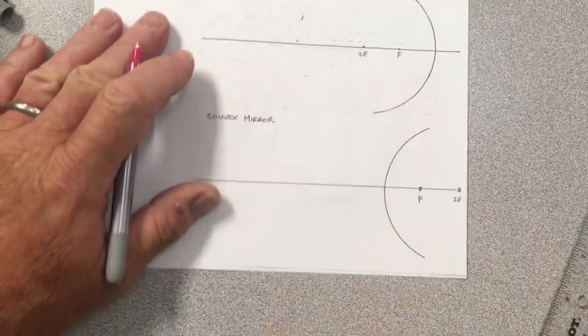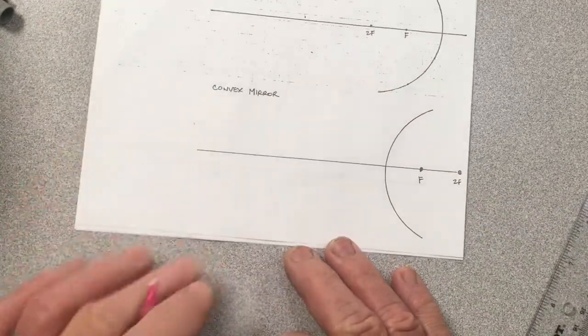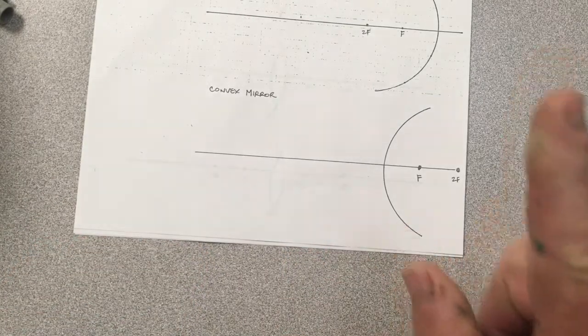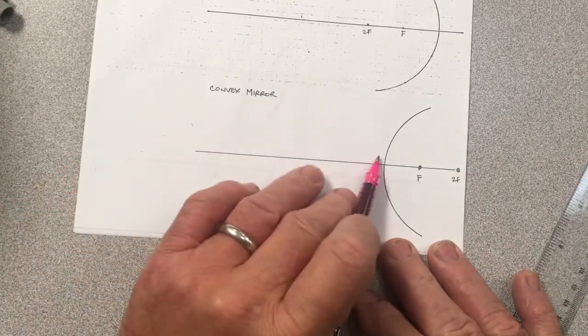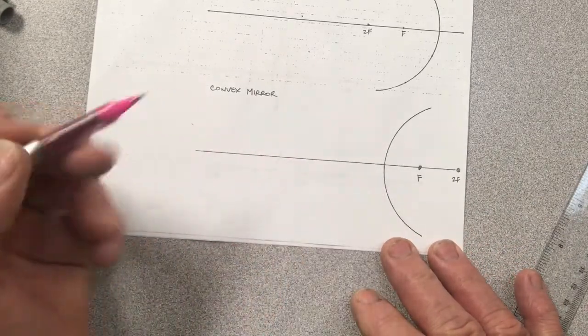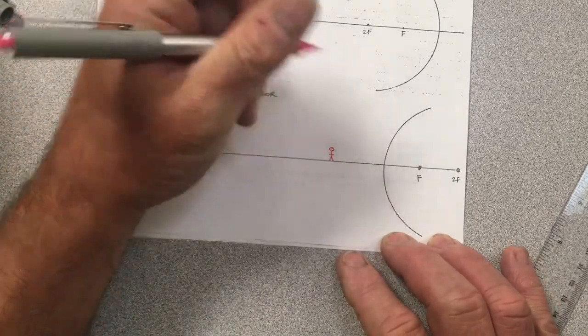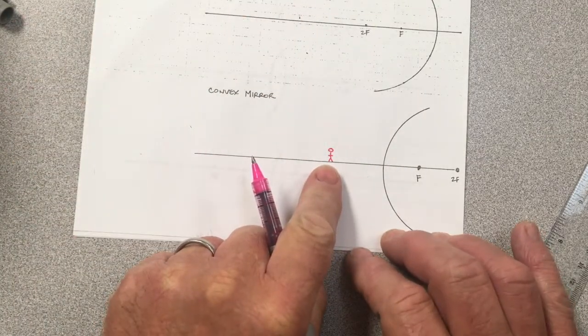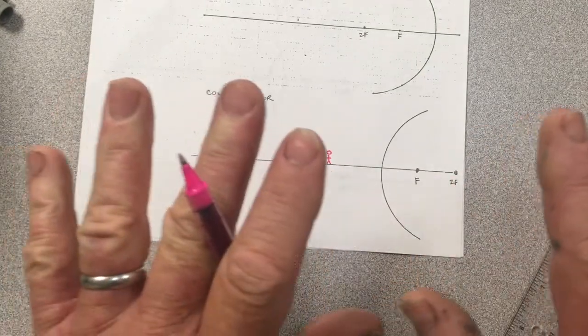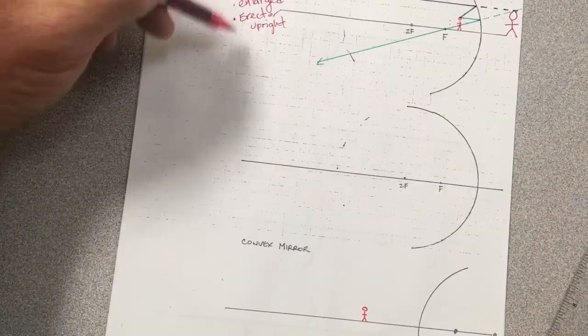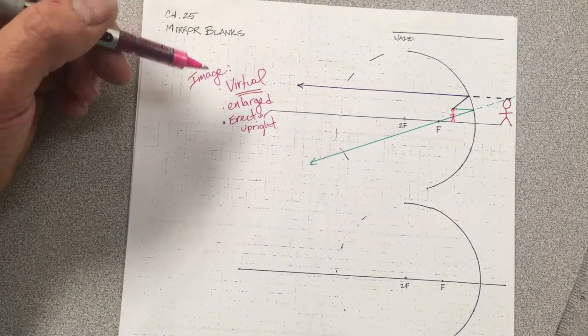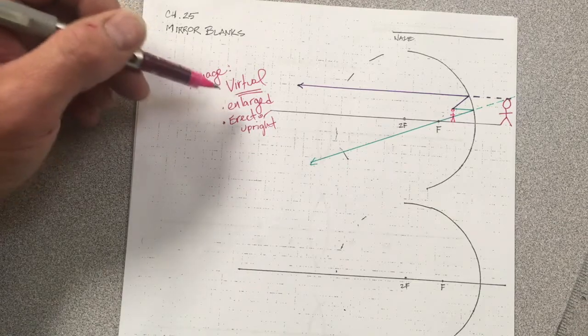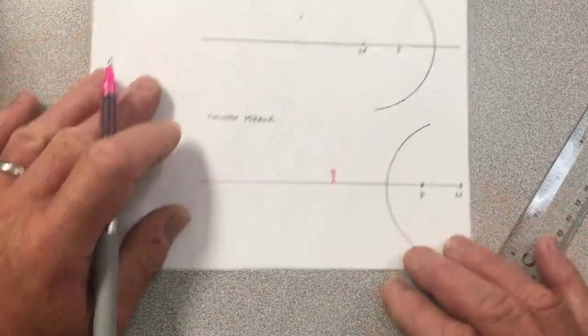I gave you an extra blank just in case you needed it. Let's do the convex mirror. Now the convex mirror has only one case. No matter where the object is along the principal axis in front of the shiny side of the mirror, you get the same result. While there's a variation in the size of the object compared to the size of the image, it's always the same three words in terms of it being upright or inverted or enlarged or reduced.